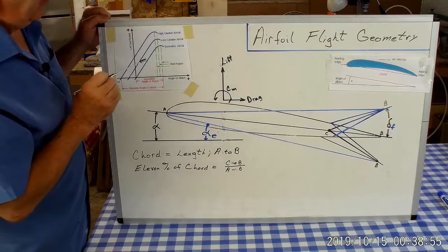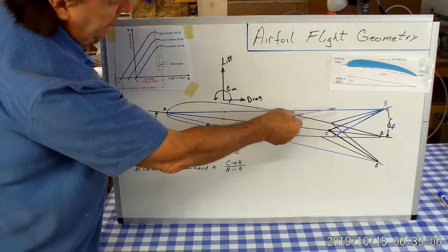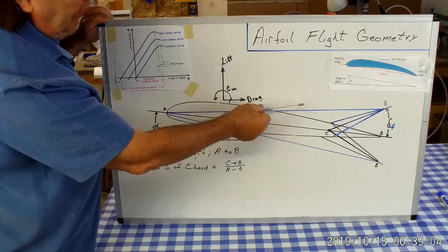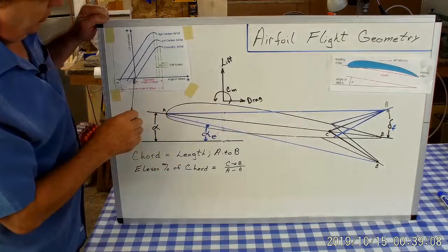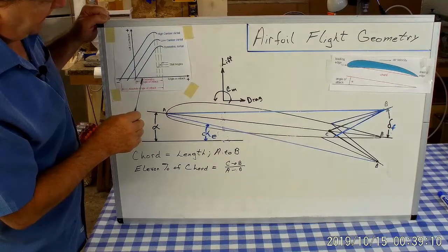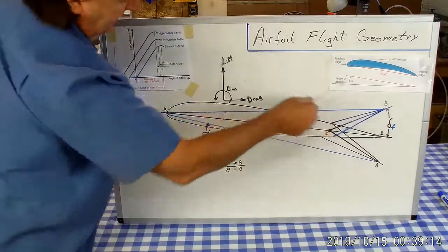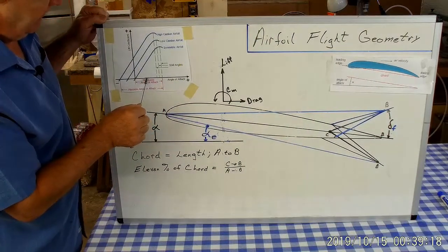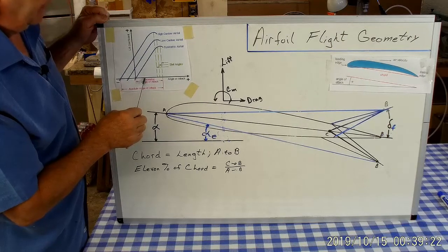Vice versa, as we deflect the flap up, that effective camber—or excuse me, effective cord line—goes to a shallower angle of attack and the curve would move this way. The zero lift line, as we deflect this flap up at the back, in other words up elevon, this curve is going to move this way on the graph and the zero lift line is now going to be at a positive angle of attack.